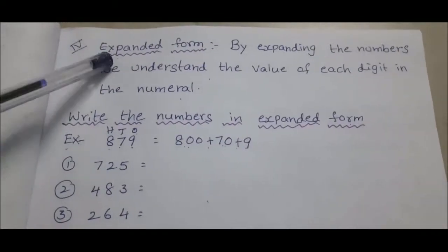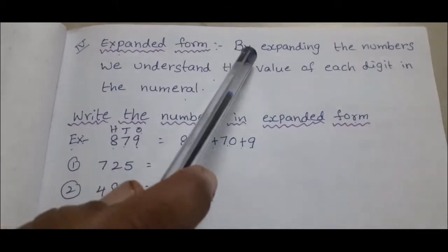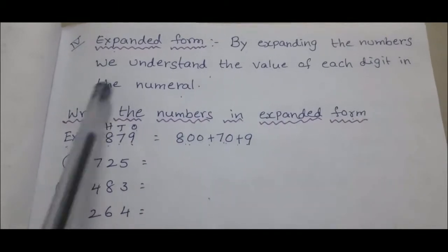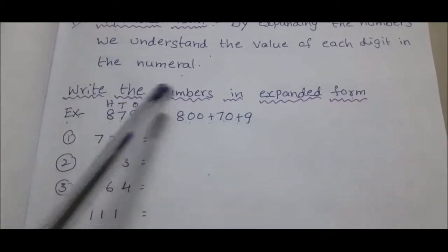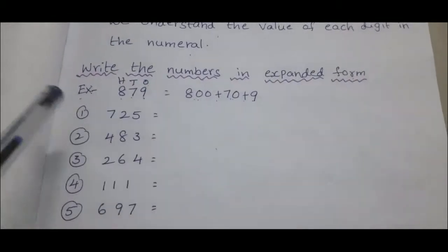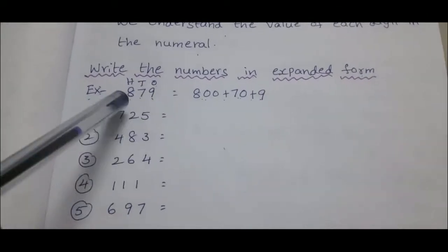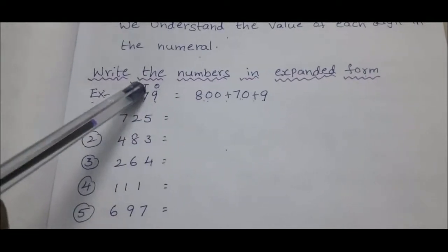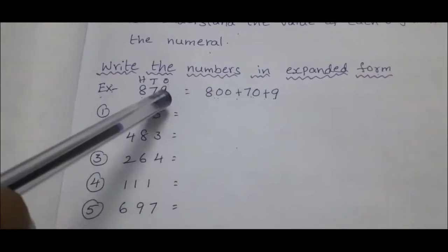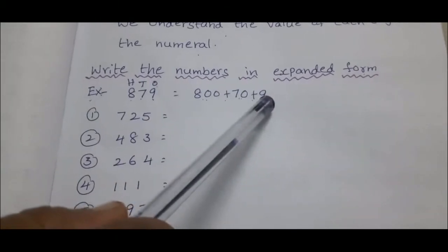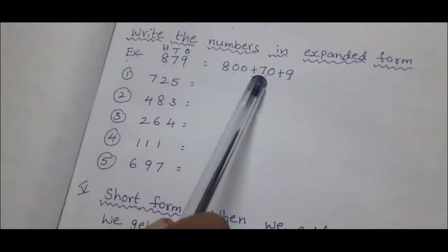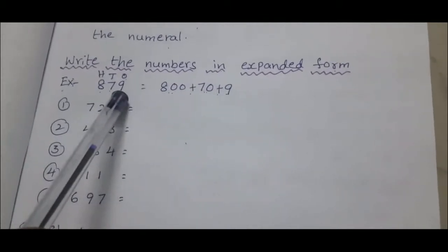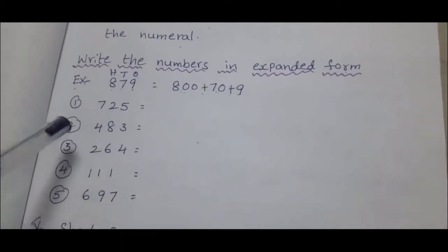Next: expanded form. Expanded form means by expanding the numbers we understand the value of each digit in the numeral. Example 879: 8 is in hundreds place, so we write 800. 7 is in tens place, so we write 70. 9 is in ones place, so we write 9. Expanded form: 800 plus 70 plus 9. One is done for you; remaining problems you do.